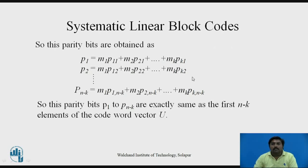We can also derive the formula for parity bits directly. p1 = m1·p11 + m2·p21 + ... + mk·pk1. Similarly, p(n-k) = m1·p1,(n-k) + ... + mk·pk,(n-k). These parity bits p1 to p(n-k) are exactly the same as the first n-k elements of the codeword vector u.